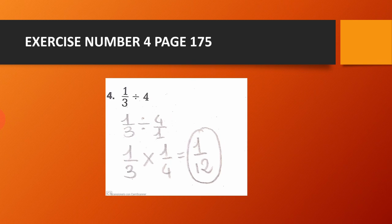Exercise number 4, page 175. We have 1 over 3 divided by 4. We transform the 4 into a fraction, so it becomes 1 over 3 divided by 4 over 1. Then we use the rule: keep, change, flip. So we have 1 over 3 times 1 over 4.